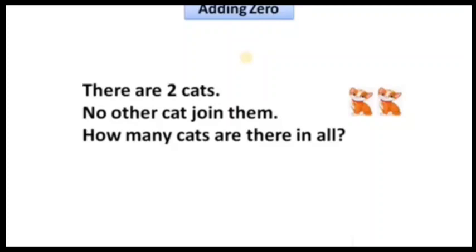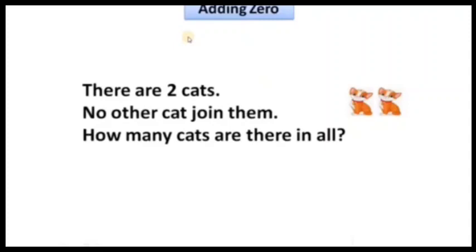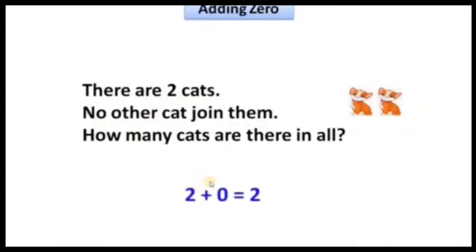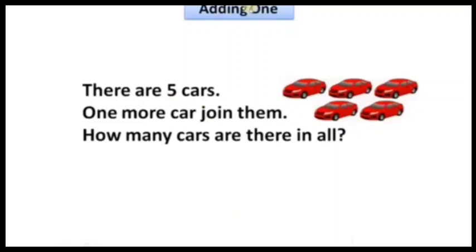There are two cats. No other cat joins them. How many cats are there in all? Two cats are there, no other cat joined. Two plus zero equals two. Any number you add zero to, you get that number only. No other cat joined means you add zero — no change, only two. Two plus zero equals two cats.